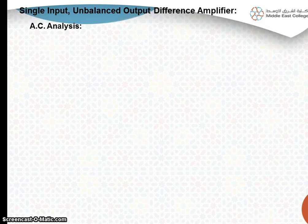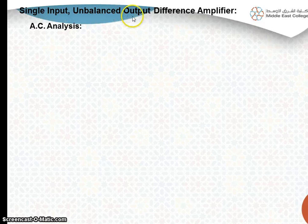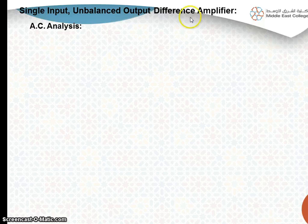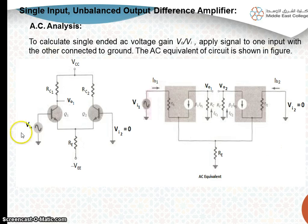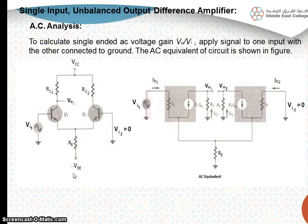Now we will study about the AC analysis of differential amplifier. We are discussing the case of single input unbalanced output configuration of differential amplifier. In the figure, there is only one input; the other input is not connected and is shorted to ground. The output is taken from one collector with respect to ground, so it is unbalanced output.